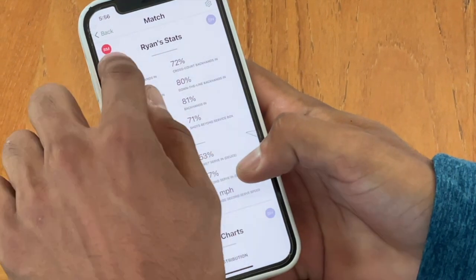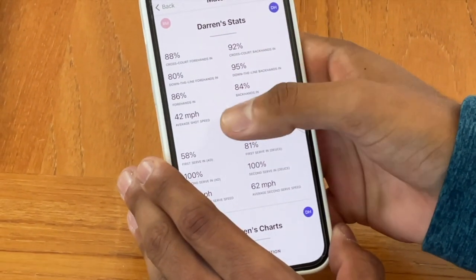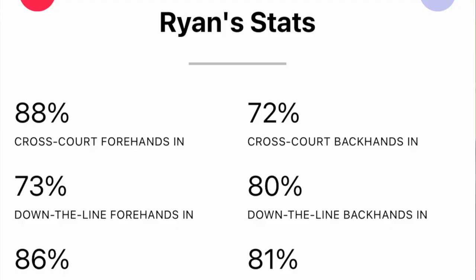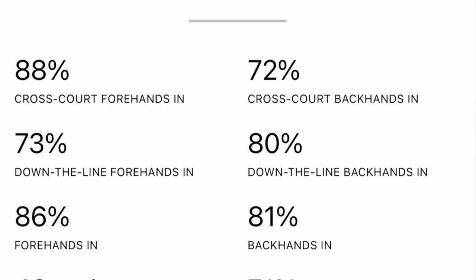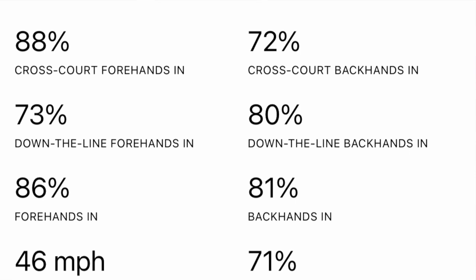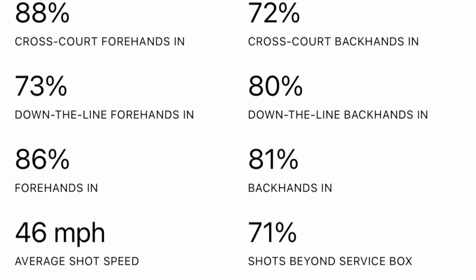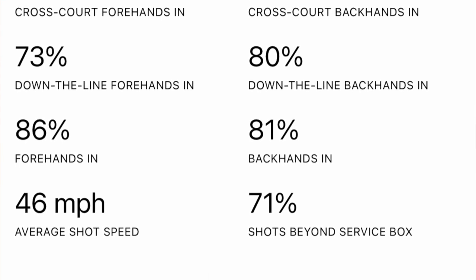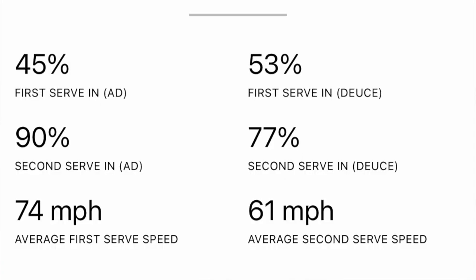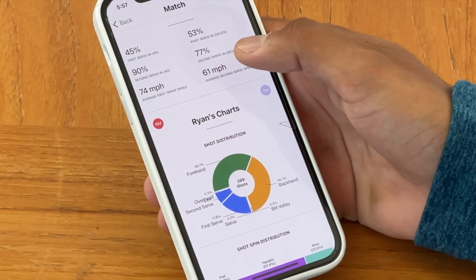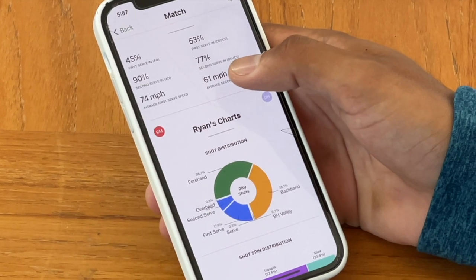There are two circles at the top — Ryan's circle is selected right now. If I tapped on Darren's, it would show all of his stats. For Ryan, you can see it breaks out consistency of his forehands and backhands based on direction — cross-court and down the line. He's got a more consistent cross-court forehand and more consistent down-the-line backhand in this match. Overall, slightly more consistent forehand. You can also see the average shot speed: 46 miles an hour, and 71% of his shots were beyond the service box.